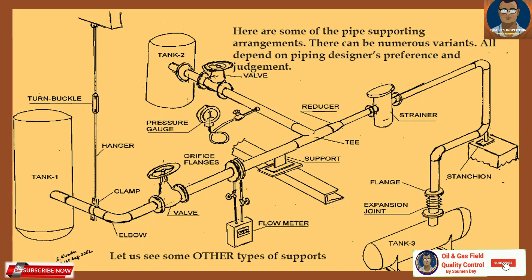Here are some pipe supporting arrangements — there can be numerous variants, all depending on the piping designer's preference and judgment. You can see we have put a turnbuckle as a supporting system, with the pipe hanging from the top, and there are also some bottom supports. We can put typical pipe supports in various configurations. There are many types, but only a few are mentioned here.